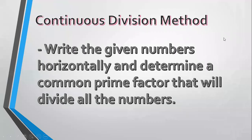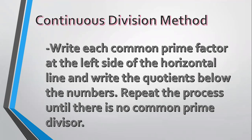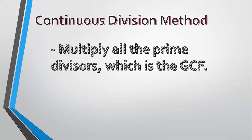Using the continuous division method, we are going to write the given numbers horizontally and determine a prime common factor that will divide all the numbers. Write each common prime factor at the left side of the horizontal line and write the quotients below the numbers. Repeat the process until there is no common prime divisor. Then multiply all the prime divisors, which gives the GCF.